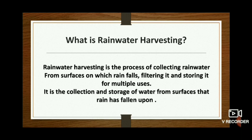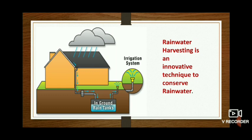This is a new technique to conserve water. Here you can see the image. Rainwater harvesting is an innovative technique — a very new technique to save water. As you can see, the rain is pouring into a tank and then the irrigation system is used.